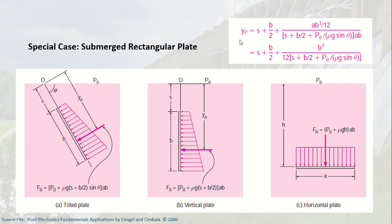To get the YP for the submerged rectangular plate — note this is only for a rectangular plate — the general equation uses IXX, but for a rectangular plate you can use the shortcut formula. For all orientations — tilted, vertical, or horizontal — you take note of the angle and the different values of S as shown in the illustration.